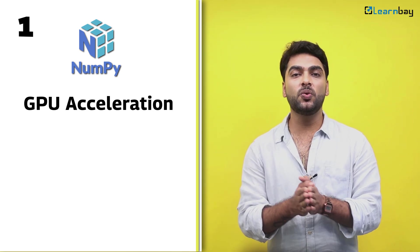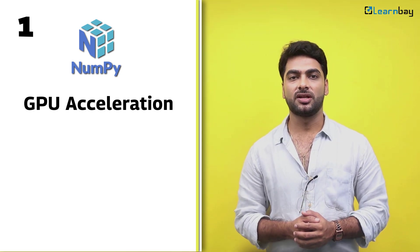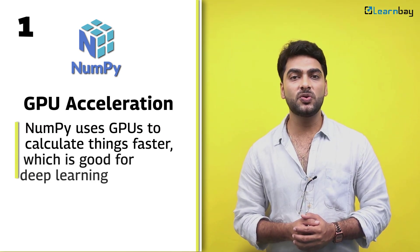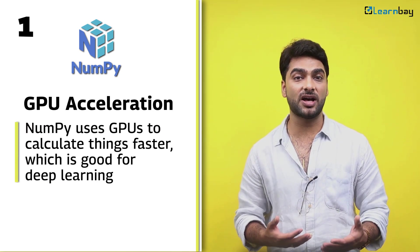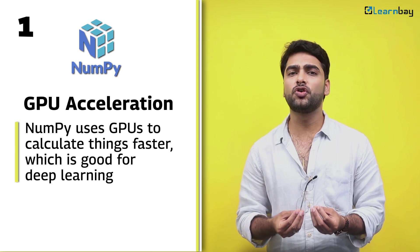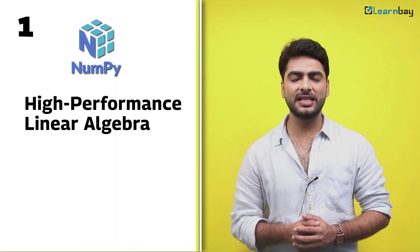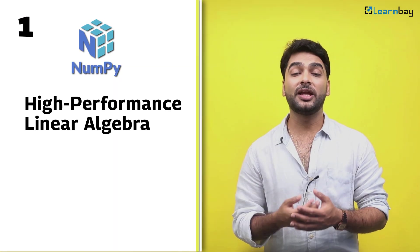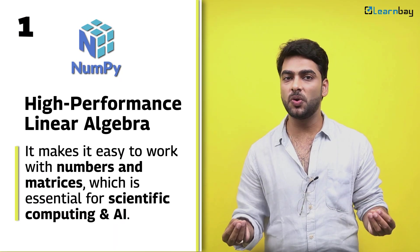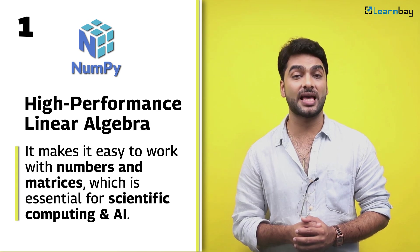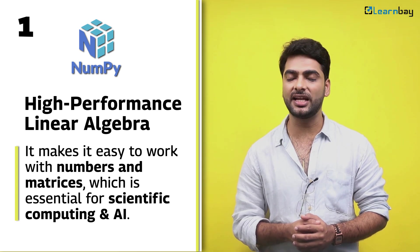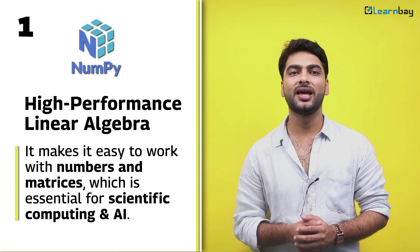Number 1: NumPy. GPU acceleration — NumPy uses GPUs to calculate things faster, which is good for deep learning. High-performance linear algebra makes it easy to work with numbers and matrices, which is essential for scientific computing and AI.